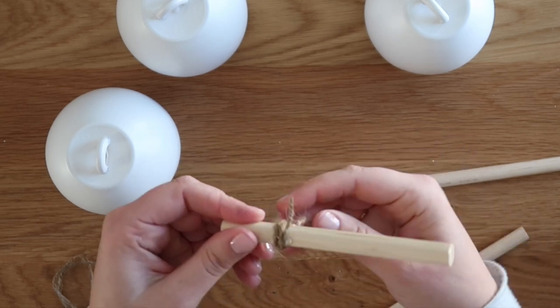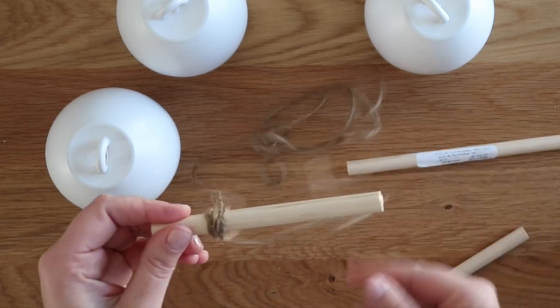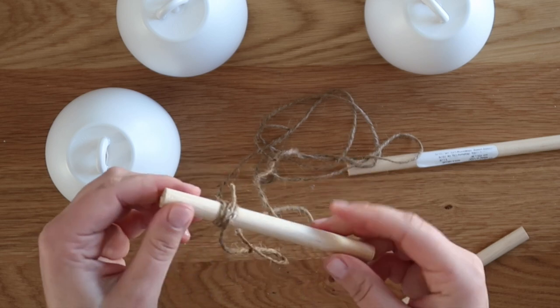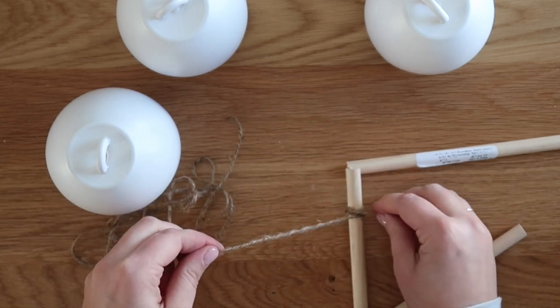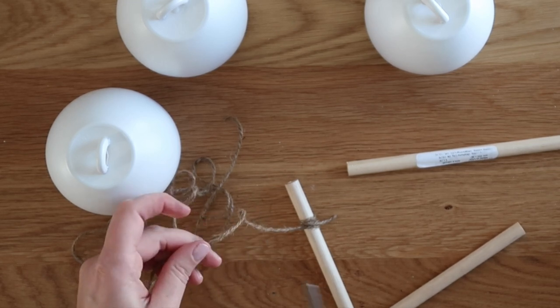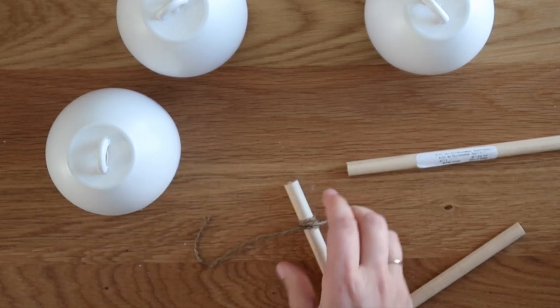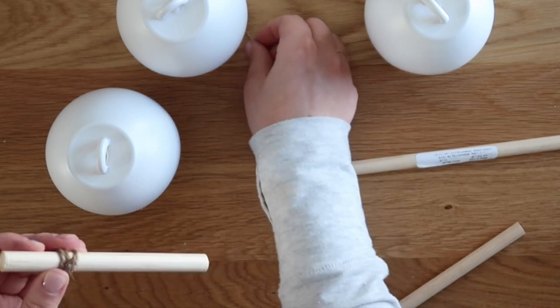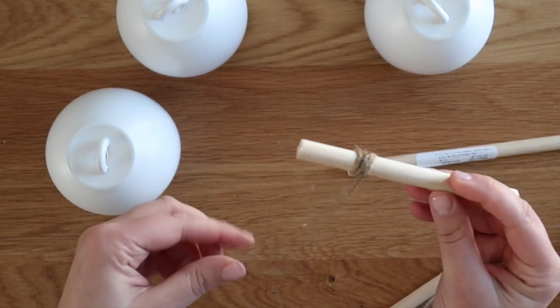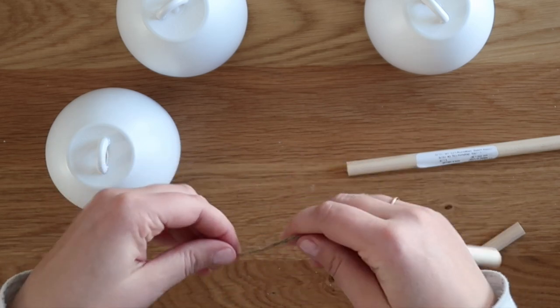And then you want to set your little wooden dowel inside your cup to see you want about, I don't know, a half inch, three quarters of an inch hanging out of the cup like when the bell hangs. So you just kind of have to eyeball it and do your best and you may have to do it and redo it.